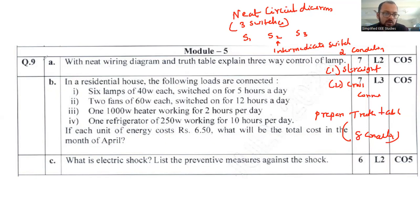Question 9b: For a residential house, the following loads are connected - six lamps of 40 watts each, switched on for 5 hours a day, and two fans.